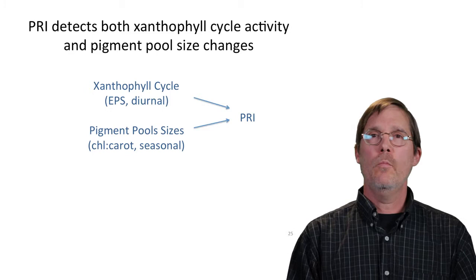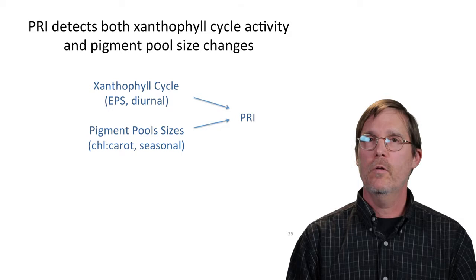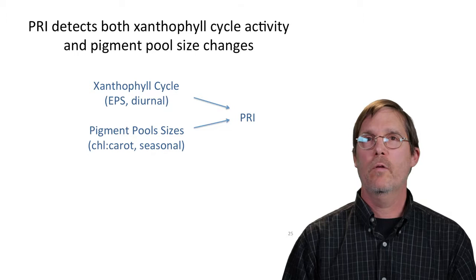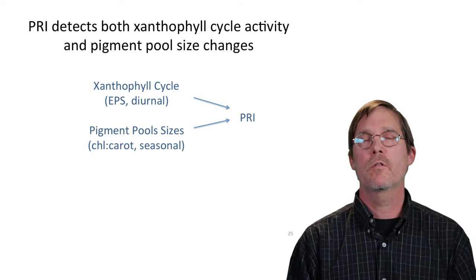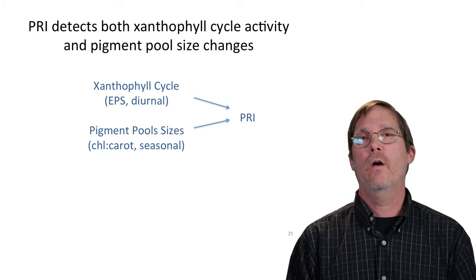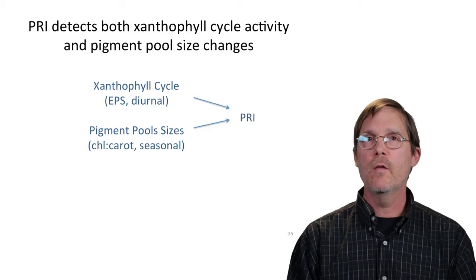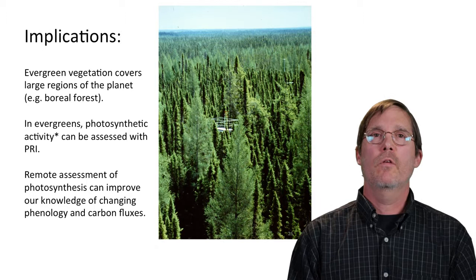To summarize the stress effects: PRI detects the xanthophyll cycle but also detects the pigment pool sizes of chlorophyll and carotenoids. The facultative response operates diurnally — measuring the epoxidation state of xanthophyll cycle pigments as they change with light and conditions during the day. The pigment pool size effect doesn't change diurnally but changes seasonally or with chronic stress, is also detectable by PRI, and is actually a much bigger and easier-to-detect signal.